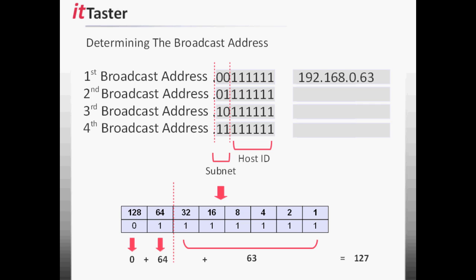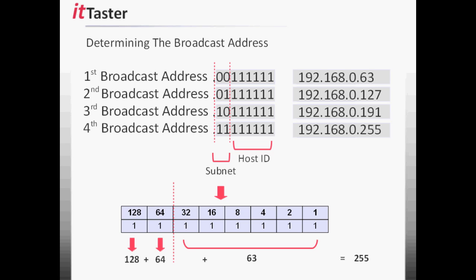For the second subnet: 0 plus 64 plus 63 equals 127. The broadcast address for the second subnet is 192.168.0.127. For the third subnet: 128 plus 0 plus 63 equals 191. The broadcast address for the third subnet is 192.168.0.191. And finally the fourth subnet: 128 plus 64 plus 63 equals 255. The broadcast address for the fourth subnet is 192.168.0.255.